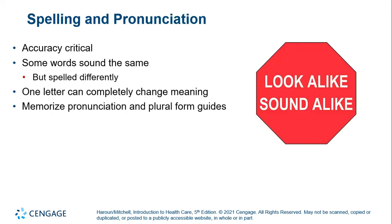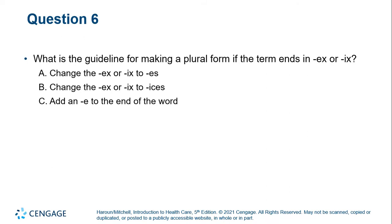Spelling and pronunciation are important because some words sound the same but are spelled differently. One letter can completely change the meaning, so you need to remember not only what the word means but its pronunciation and its plural form as well. What is the guideline for making a plural form if the term ends in X?